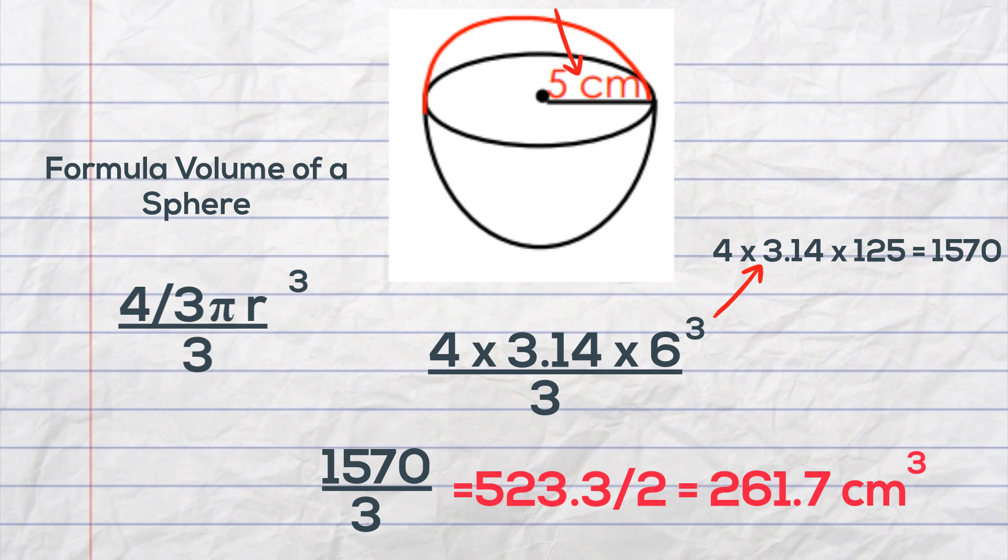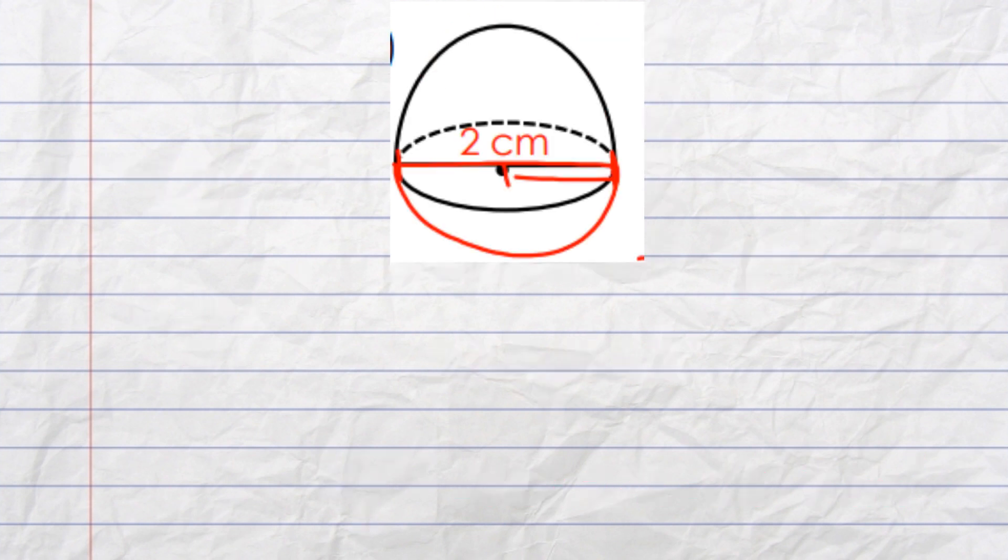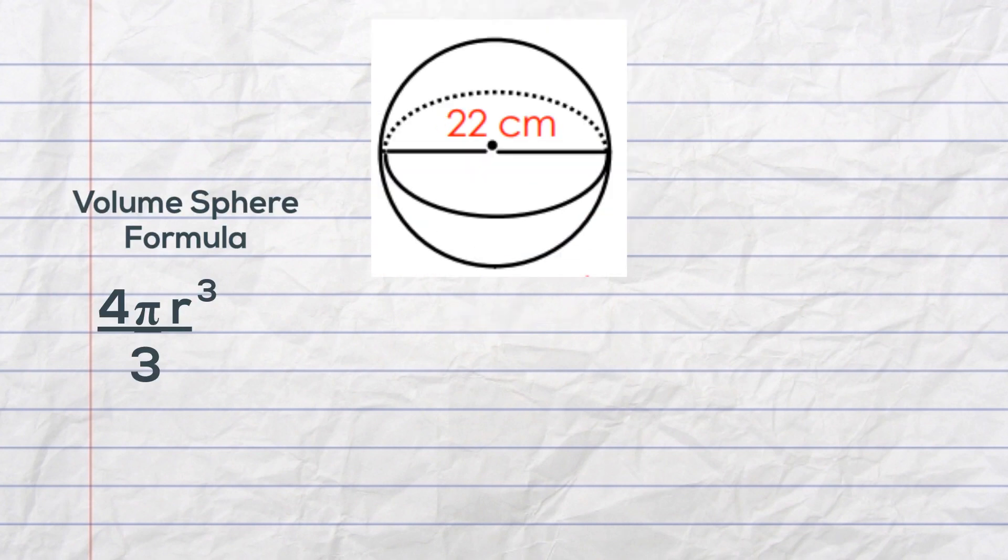Now let's look at one where the diameter is given instead of the radius. All you need to do is take the diameter and divide by two and that gives you a radius of one. So now I'll plug it into the sphere formula for volume first.